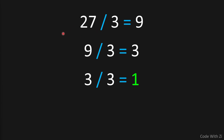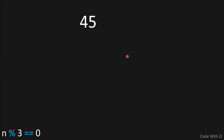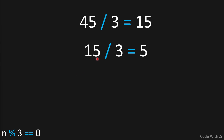Each time before we do the division, we check: is n divisible by three? We say n mod three equals zero. For example, if we have 45, we first check if it is divisible by three — 45 mod three equals zero, so true. We divide by three to get 15. Then 15 mod three equals zero, so we keep dividing: 15 divided by three is five. Now we check if five is divisible by three — five mod three is not equal to zero.